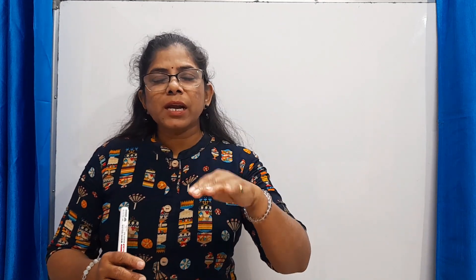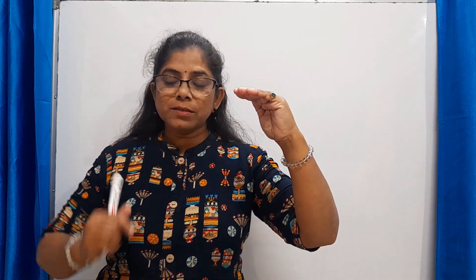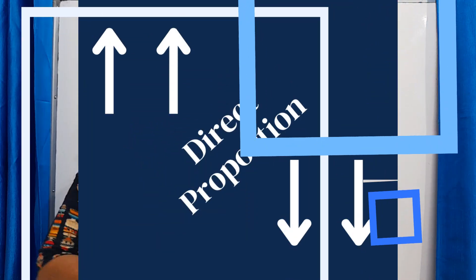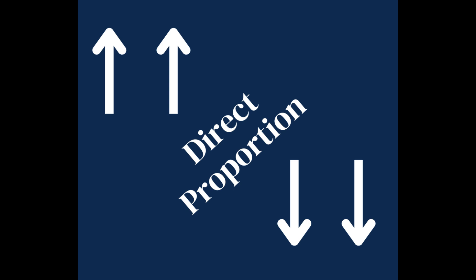Where values are directly related — for example, in a family of five members, the requirement is 15 kg of rice. If three more members join, making the family eight members, the requirement of rice will increase. So when one value increases, the other value also increases — this is direct proportion. Similarly, if one value decreases, the other also decreases. Both values move in the same direction, so it is called direct proportion.